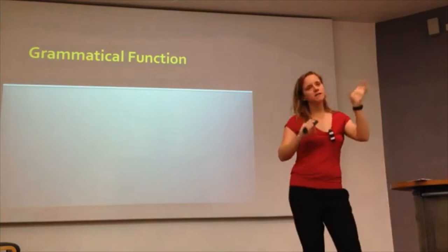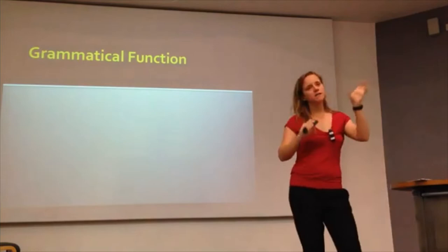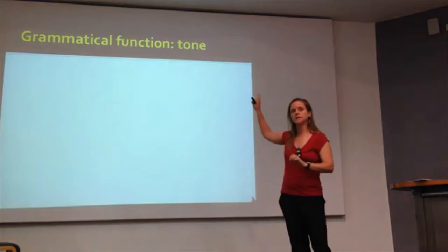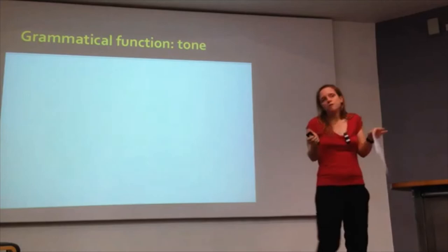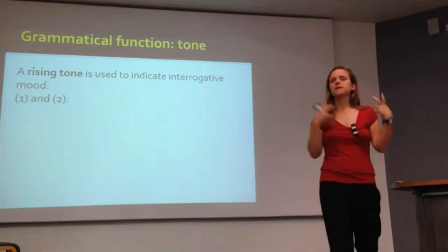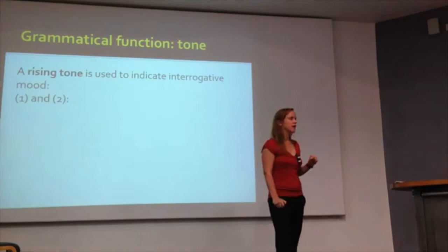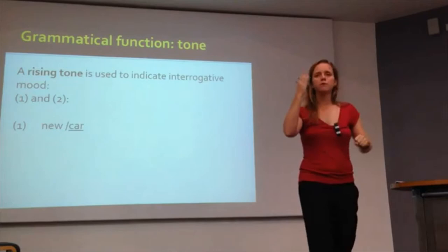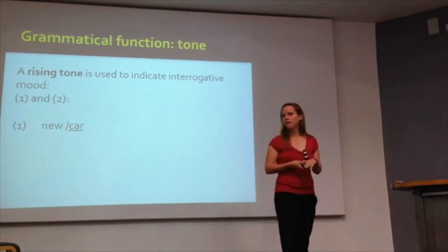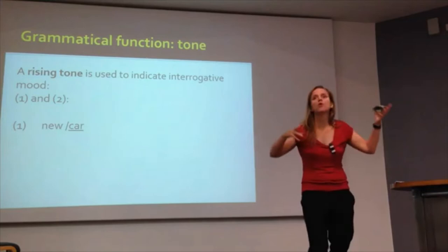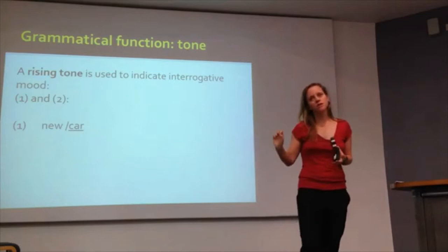Going back to the grammatical function — how tone determines grammatical function. A very simple example: a rising tone can be used to indicate that something is a question, that it's interrogative. For example, you can take two words like 'new car' and put a rising tone on the nucleus — 'new car?' — turning them into a question. We'd need more context to know exactly what the question is, but we know something interrogative is going on. Similarly, using a rising tone on a single word like 'drink?' makes it an offer or question.